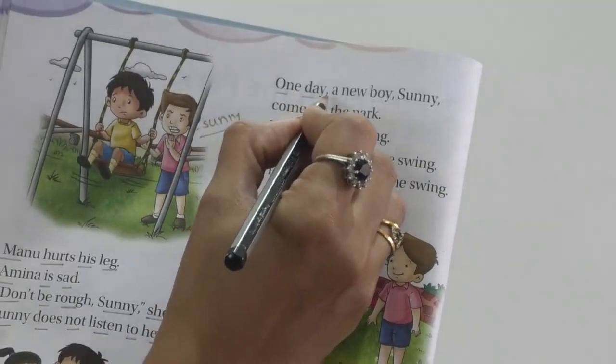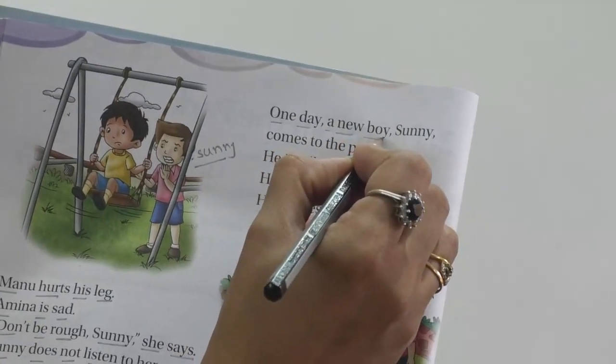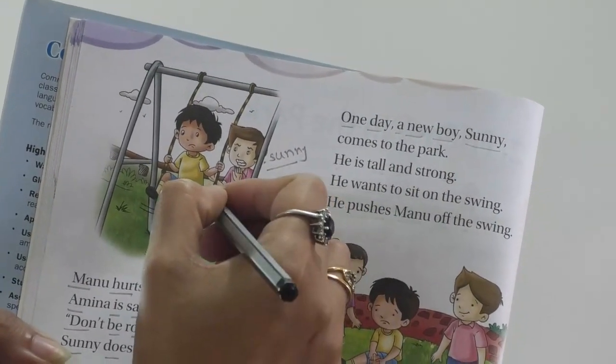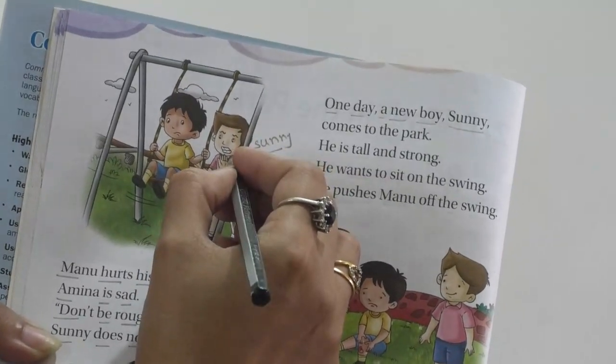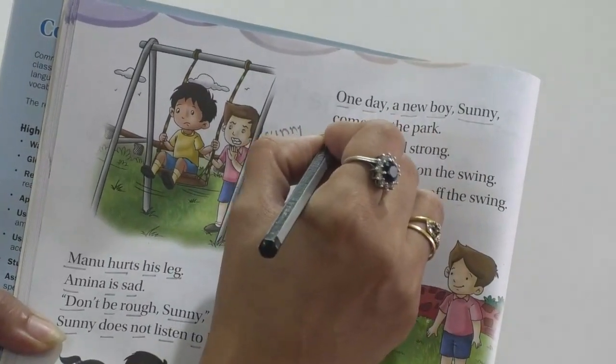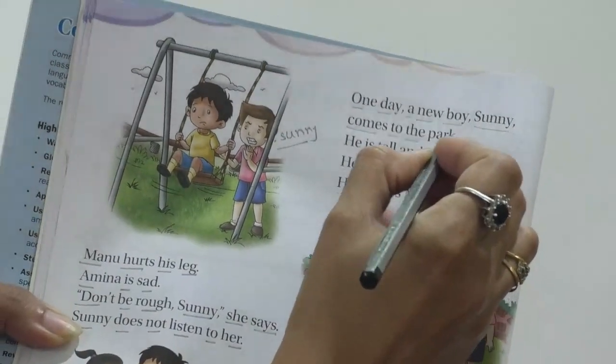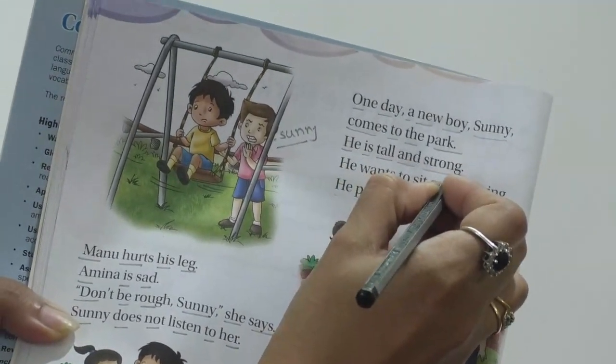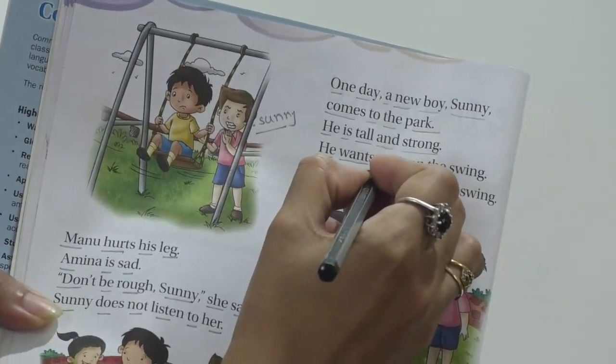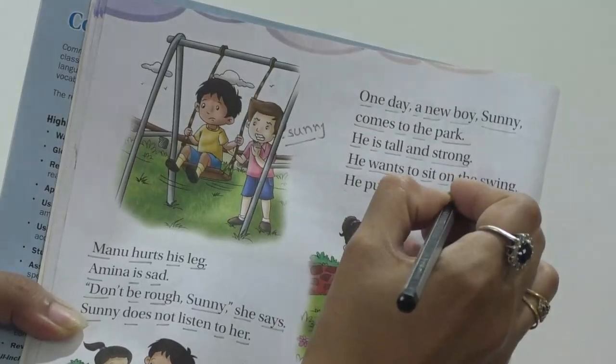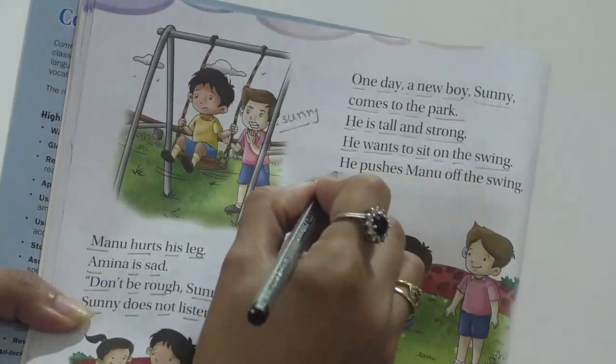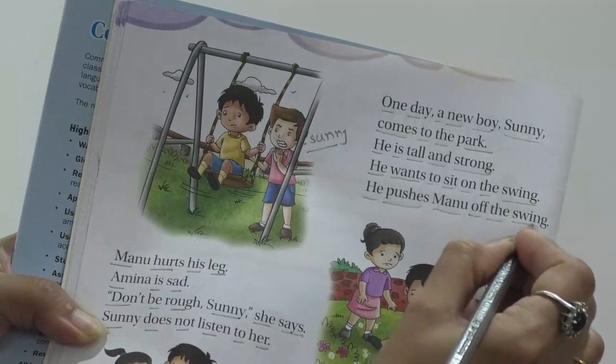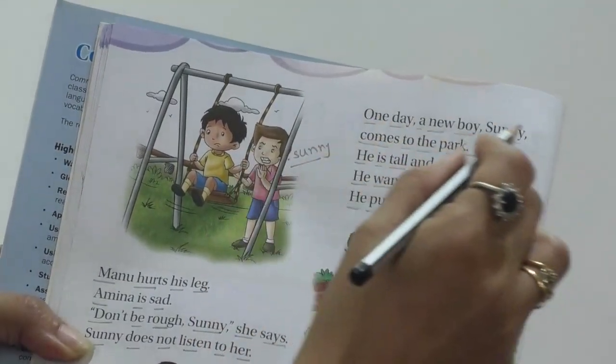We will read our fourth paragraph. One day a new boy Sunny. Look at this picture. The boy is standing and trying to push Manu. This is Sunny. Sunny comes to the park. He is tall and strong. He wants to sit on the swing. He pushes Manu off the swing. You just try to read this paragraph.